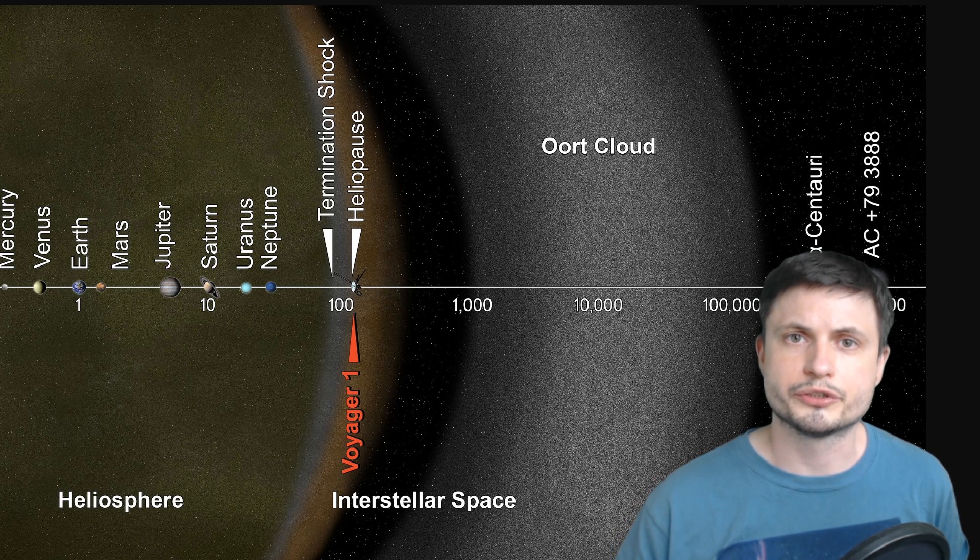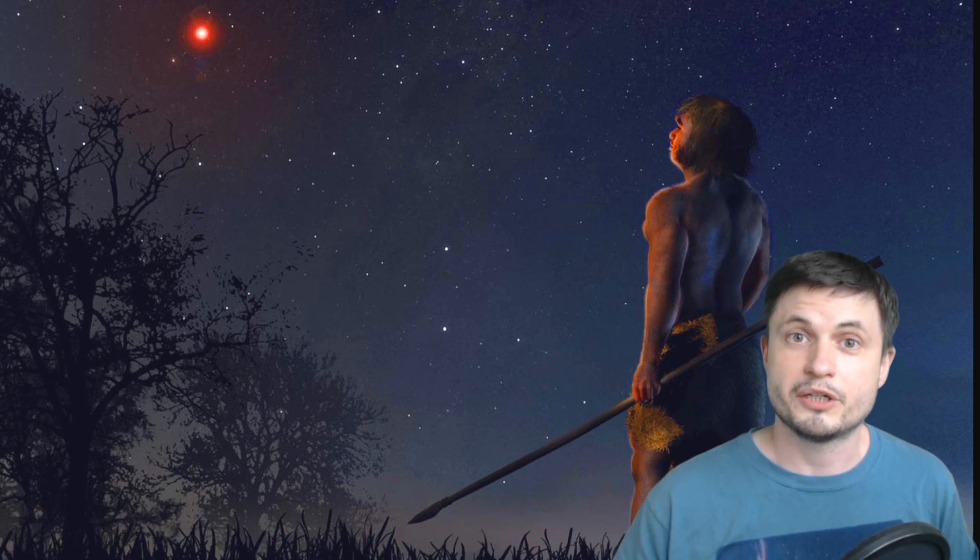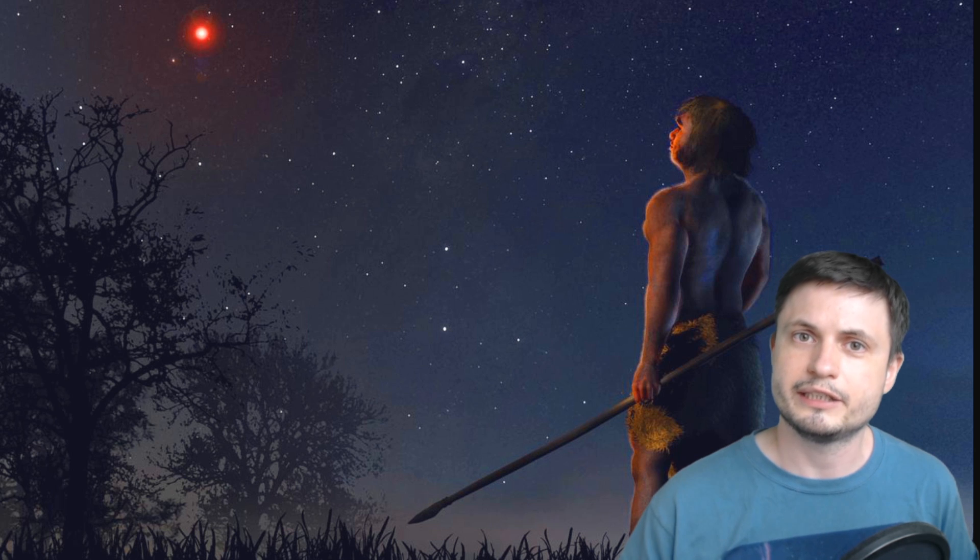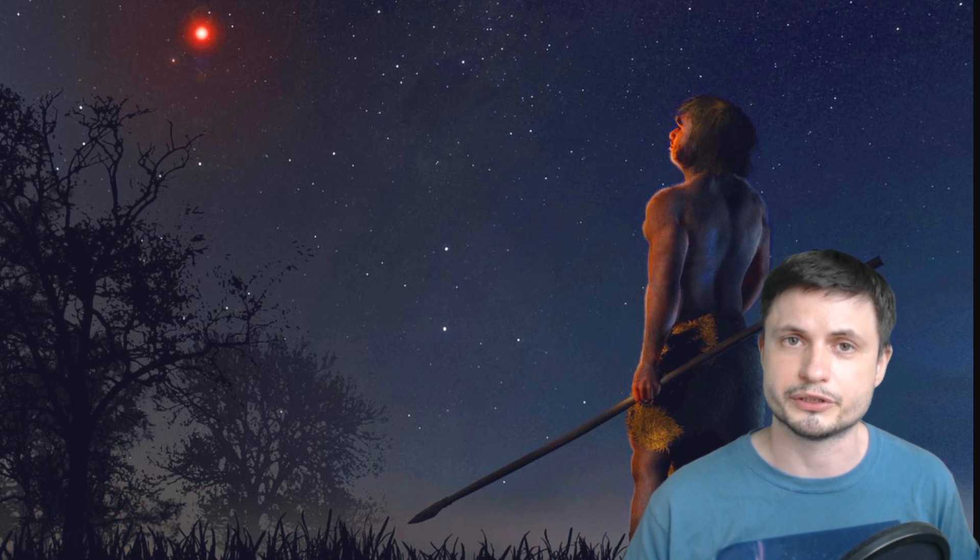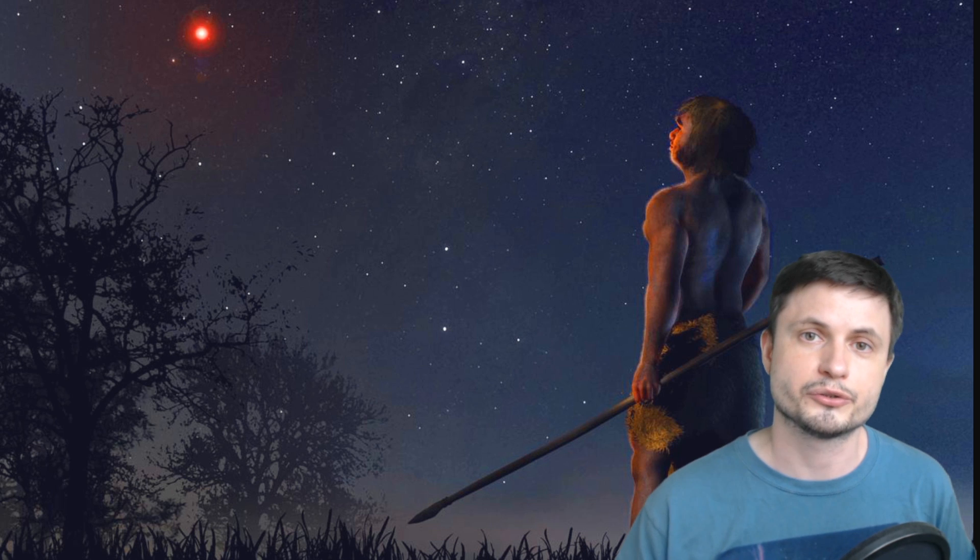So when the Scholz star, which you can see simulated right here, passed through the Oort cloud back in the days when the early humans were walking Earth, there was a slight chance that some of the comets may have been shifted to come closer to planet Earth. But here's the good news. Because of the distances involved here, it will take these comets up to about 2 million years to actually reach the inner solar system and even have a chance to come close to Earth. By then, I'm pretty sure we'll figure something out.